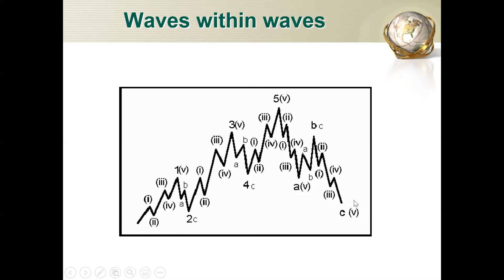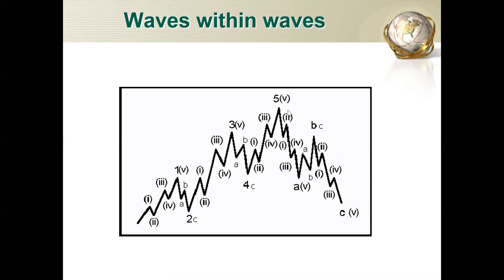In a downtrend, you also have 1, 2, 3, 4, 5, A, B, C — just pointing downward. Within each wave down, you can also have 1, 2, 3, 4, 5, A, B, C nested inside it. So we are looking at waves within waves — each wave contains its own sub-waves following the same Elliott Wave structure.